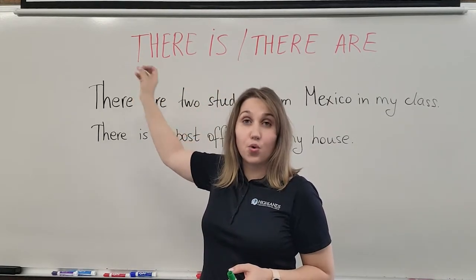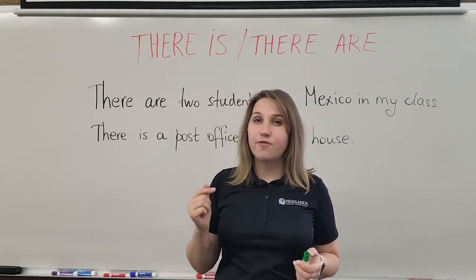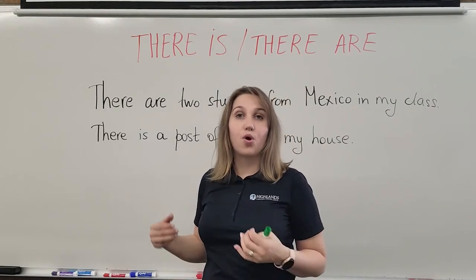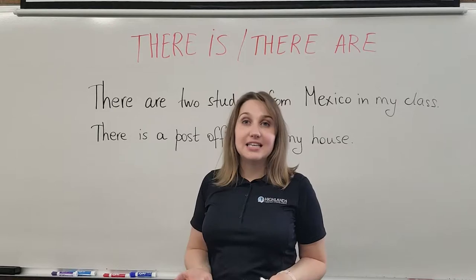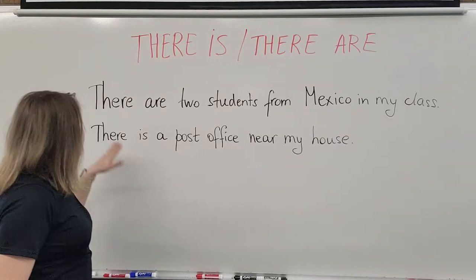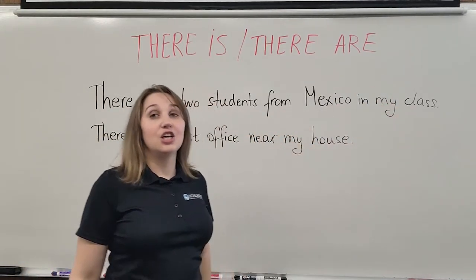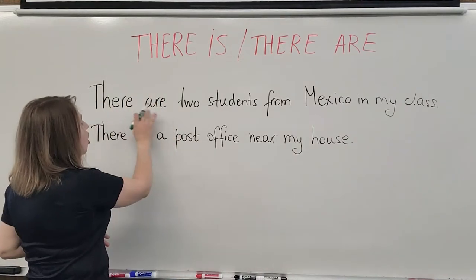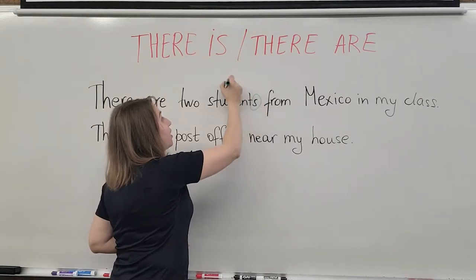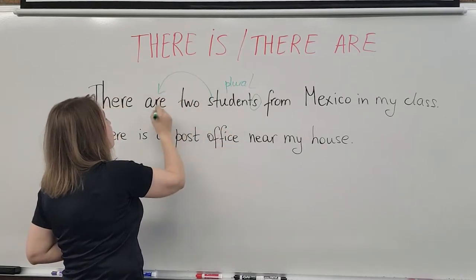We use 'there is' or 'there are' to talk about people or things, usually for the first time, and to emphasize the fact that those things or people actually exist. So let's look at our two examples here. The first one: 'There are two students from Mexico in my class.' We use the phrase 'there are' since we talk about people in the plural form. Since it's plural, we are using the form 'are'.